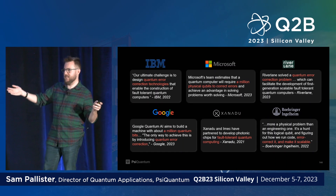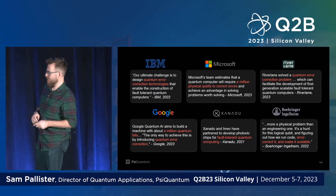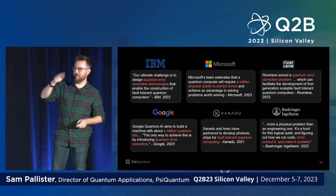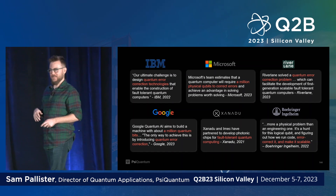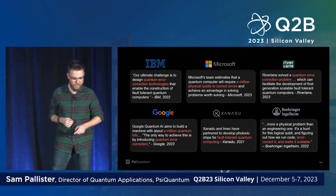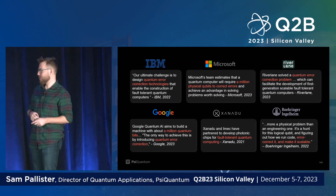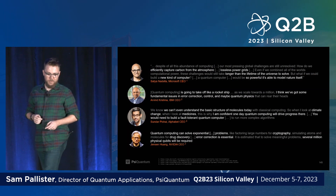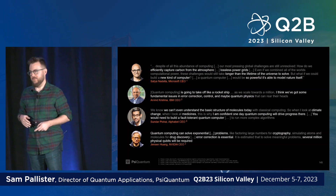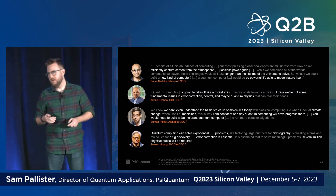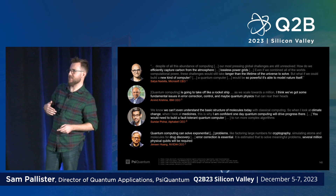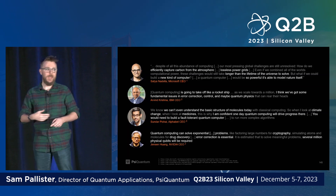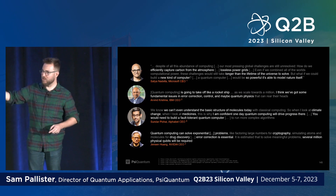Despite this gulf in capabilities, every hardware vendor over the last few days has told you they have lots of plans for scale and all scalability problems will be solved within this decade — and PsiQuantum is no different. But it's worth saying that for fault tolerance to arrive that quickly, we don't all need to be right. Everyone else could fail bar one company and the fault-tolerant era would still be upon us.